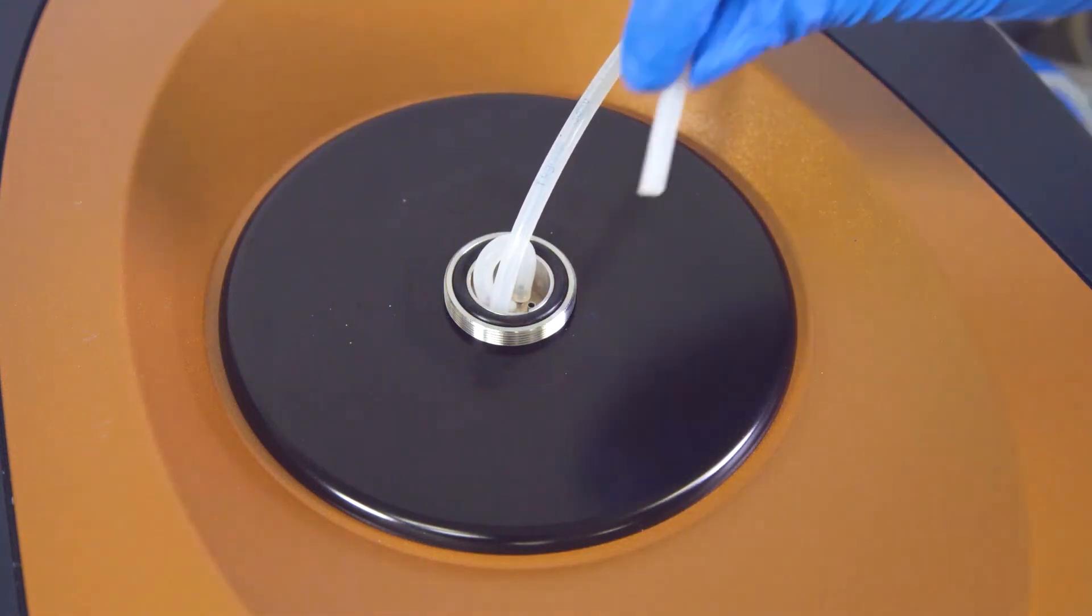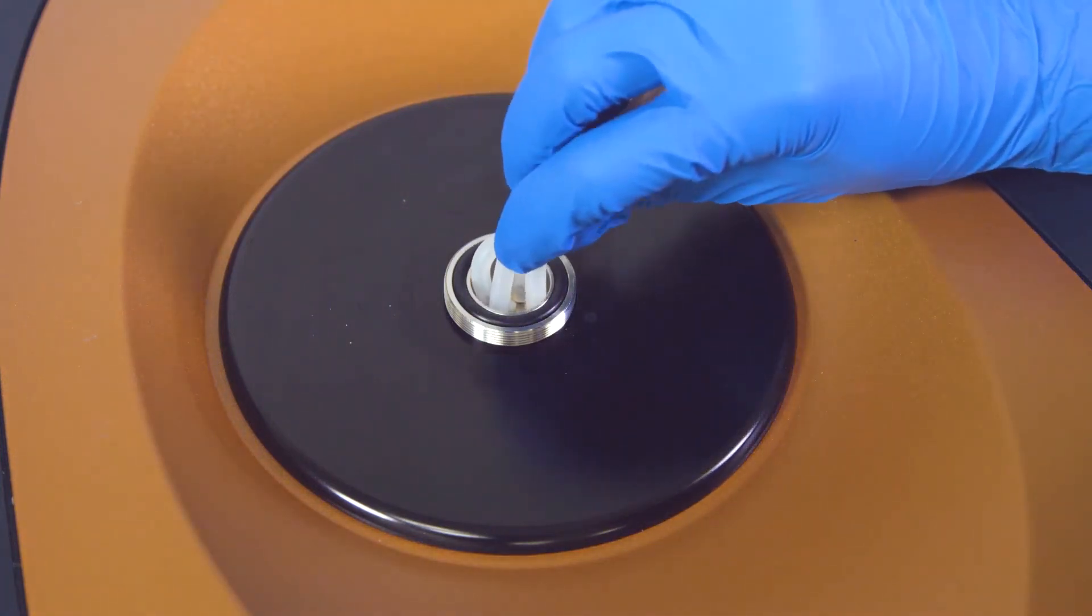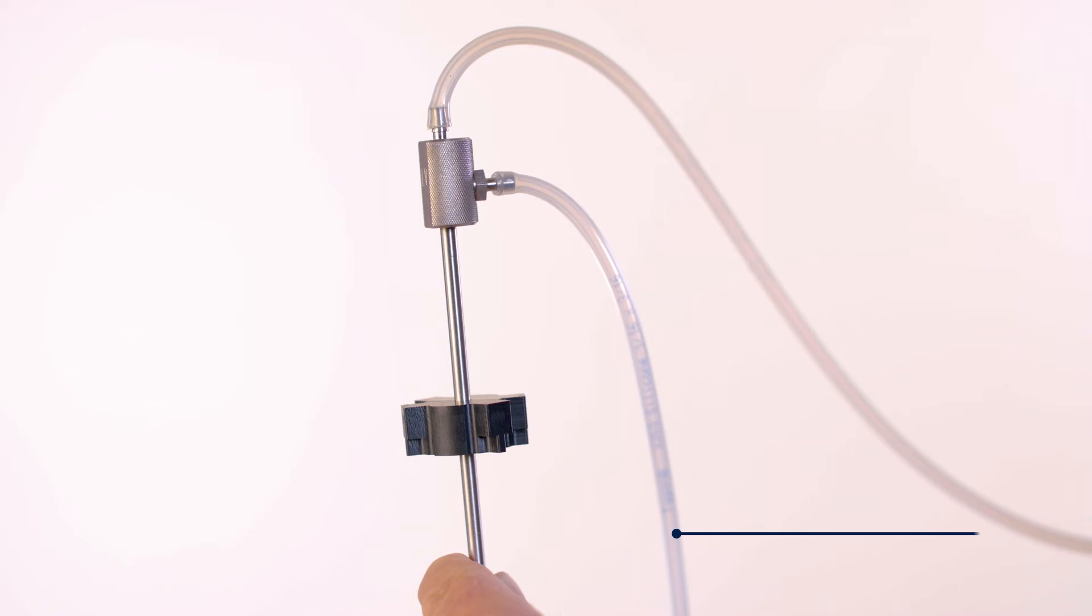On the NanoDSC, the hose can be connected directly to the cell or reference access ports. Cleaning the ITC requires the use of the cleaning tool, where solvent is pumped into the side and out of the top of the tool into the waste container.